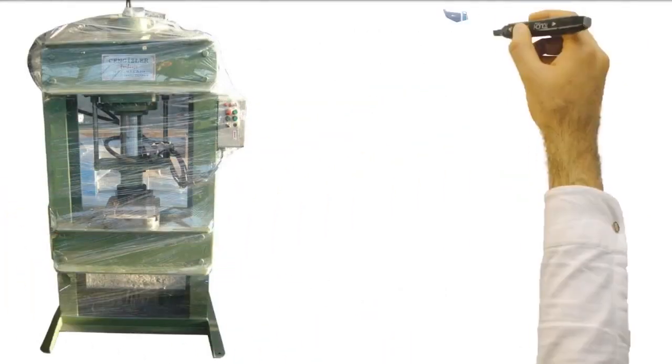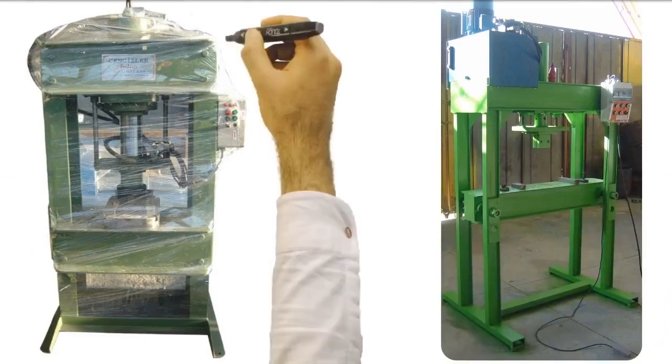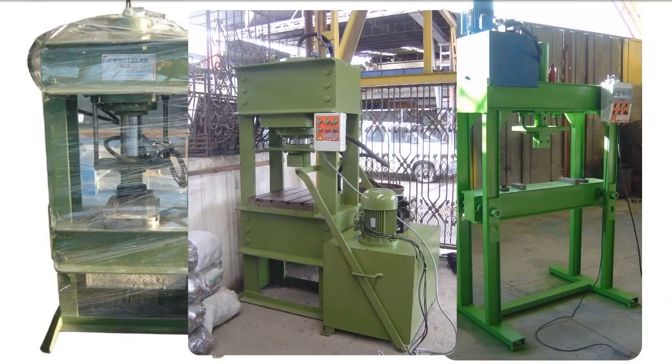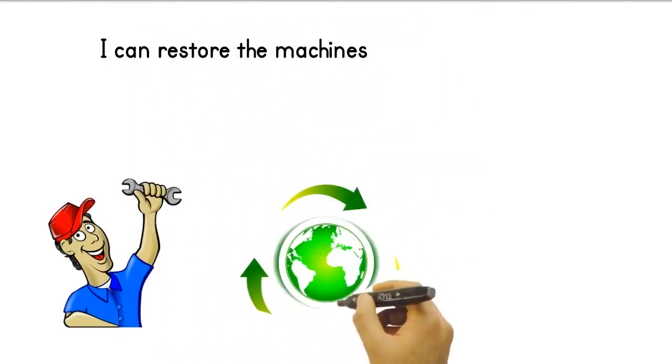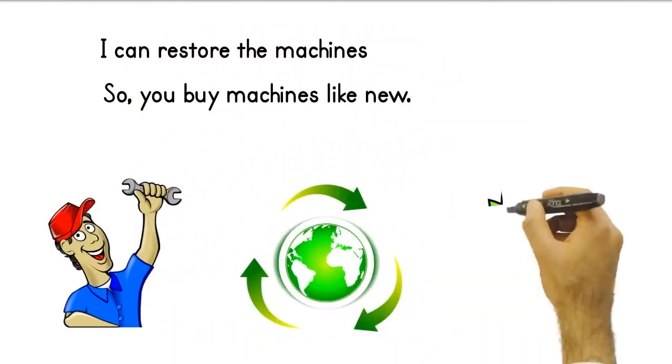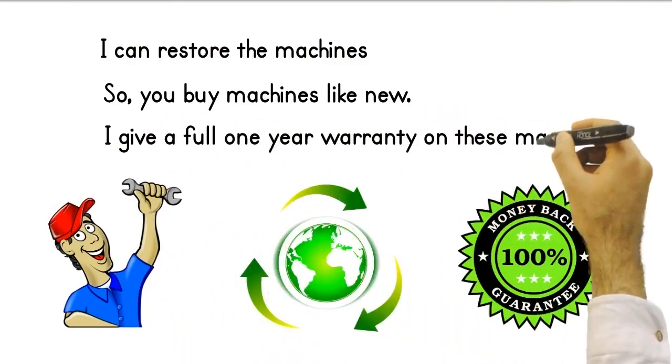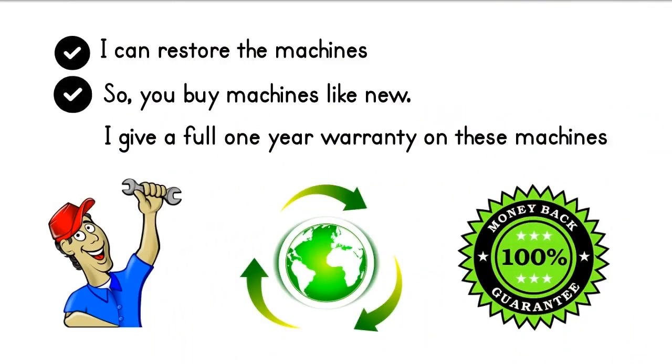At the same time, we always offer you special solutions with our H-type press production from 60 tons to 300 tons. Of course, if you want, I can restore the machines I found in the Turkey market for you. Thus, you buy machines like new. I give a full one-year warranty on these machines that I restore.